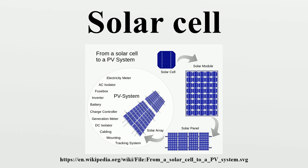However, this success was possible because in the space application, power system costs could be high, because space users had few other power options and were willing to pay for the best possible cells. The space power market drove the development of higher efficiencies in solar cells up until the National Science Foundation research applied to national needs program began to push development of solar cells for terrestrial applications. In the early 1990s, the technology used for space solar cells diverged from the silicon technology used for terrestrial panels, with the spacecraft application shifting to gallium arsenide-based III-V semiconductor materials, which then evolved into the modern III-V multi-junction photovoltaic cell used on spacecraft.